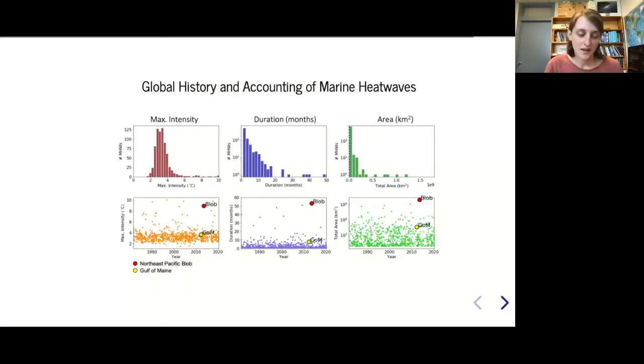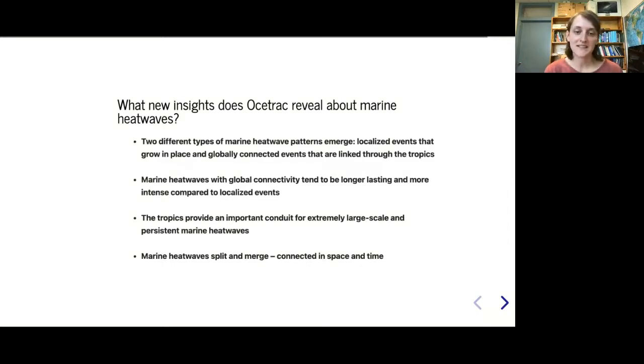We did this for all marine heat waves in this dataset. This is an example of some statistics you can draw, plotting where the Blob and the Gulf of Maine marine heat wave compared to all the others. You can see what I'm calling the Blob was quite unusual. So what new insights does OAStrack reveal? We've seen two different patterns evolve: events that are more localized and don't travel very far, compared to ones that seem to be globally connected. We find the tropics play a very important role in connecting global marine heat waves.